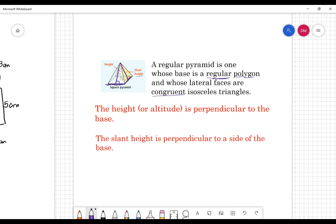And because our slant height is going perpendicular to that side from the vertex, the slant height will also be the same for each of these lateral faces.